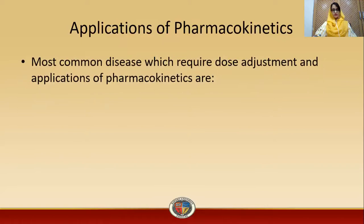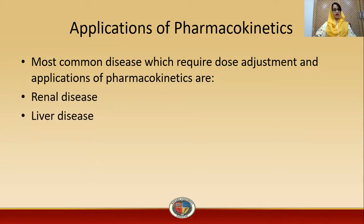The most common diseases which require dose adjustment and application of pharmacokinetics are renal diseases and liver disease. The renal route is most important for excretion of drugs, and the liver is the most important organ for metabolism of drugs. So if both of these organs are affected or diseased, both of these functions will be compromised.